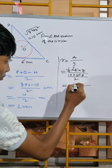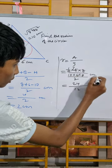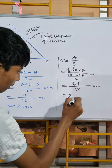So here we get 24 divided by 12, which will give us our answer of 2 cm.